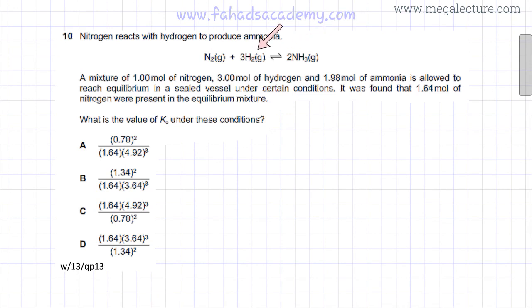The question states that a mixture of one mole of nitrogen, three moles of hydrogen gas, and 1.98 moles of ammonia is allowed to reach equilibrium in a sealed vessel under certain conditions. So these are your initial moles.